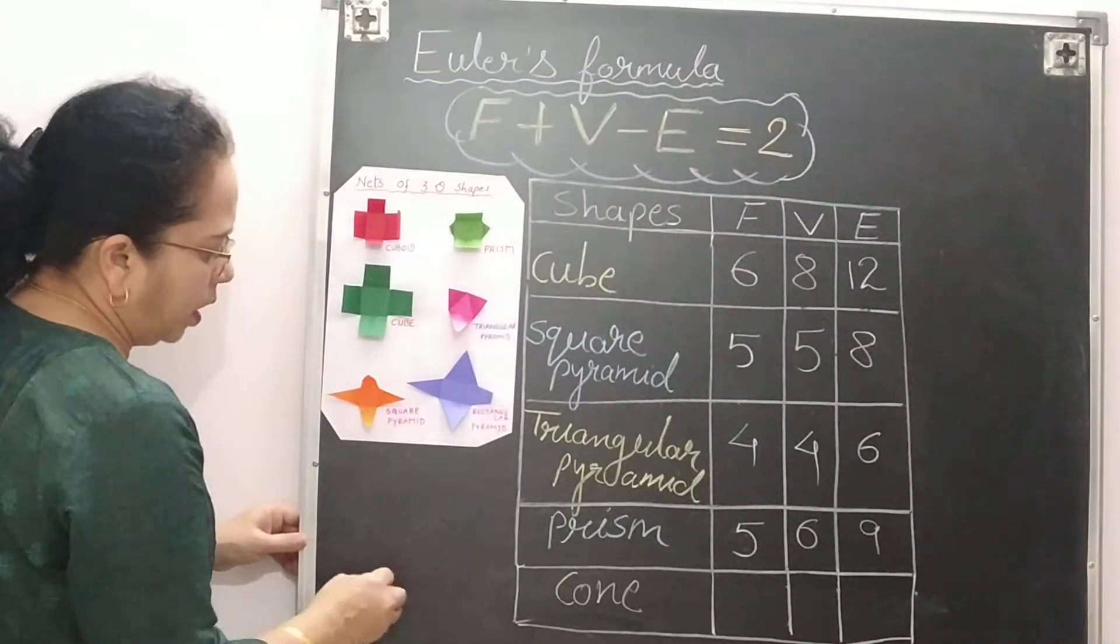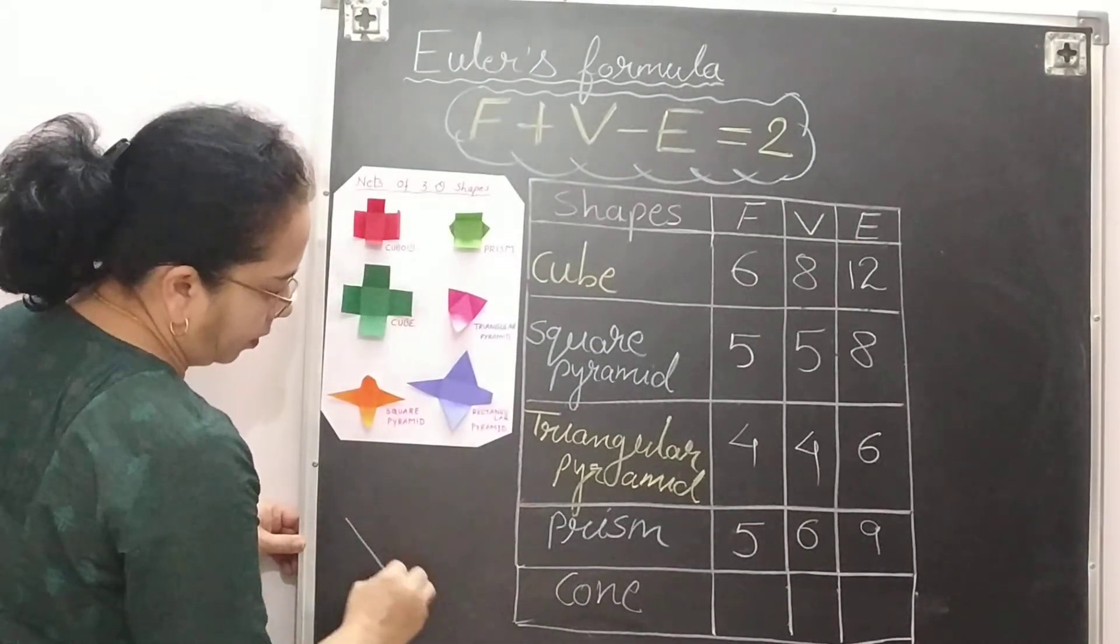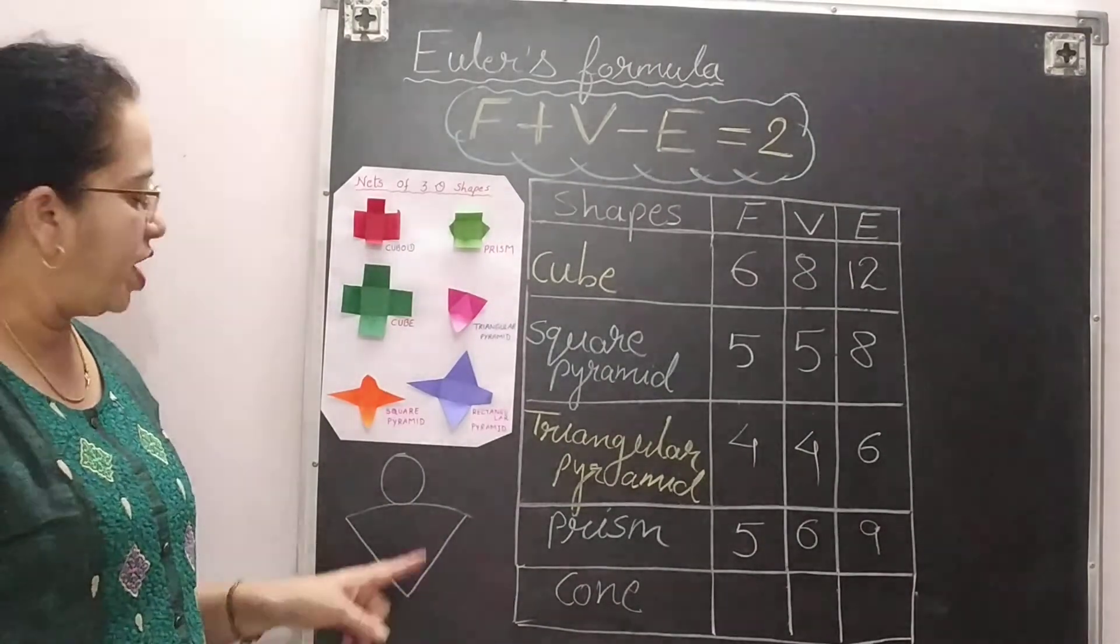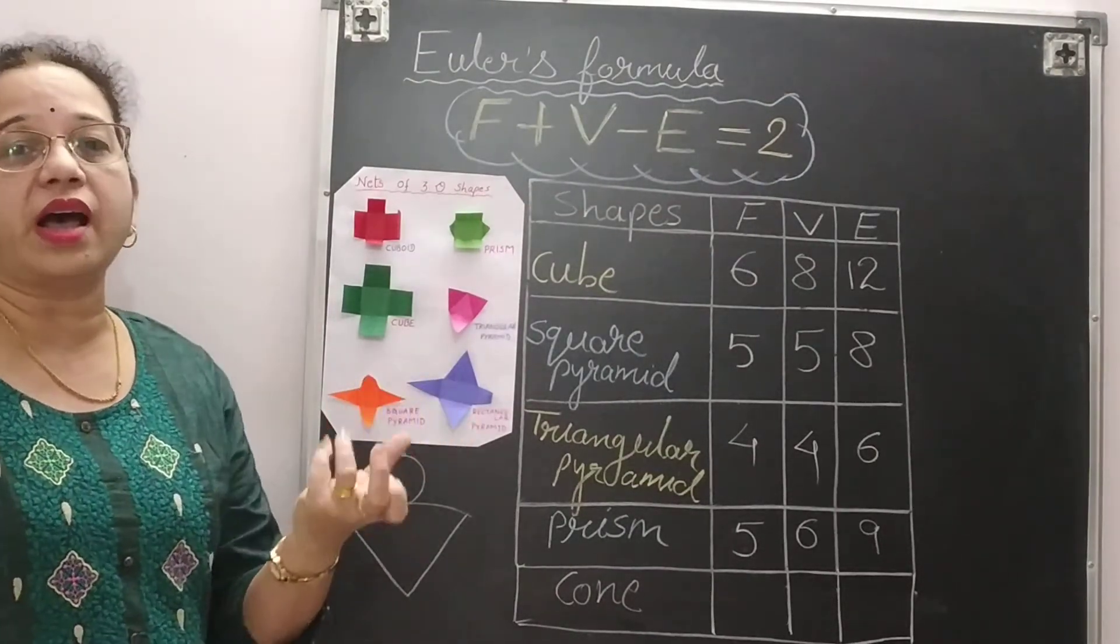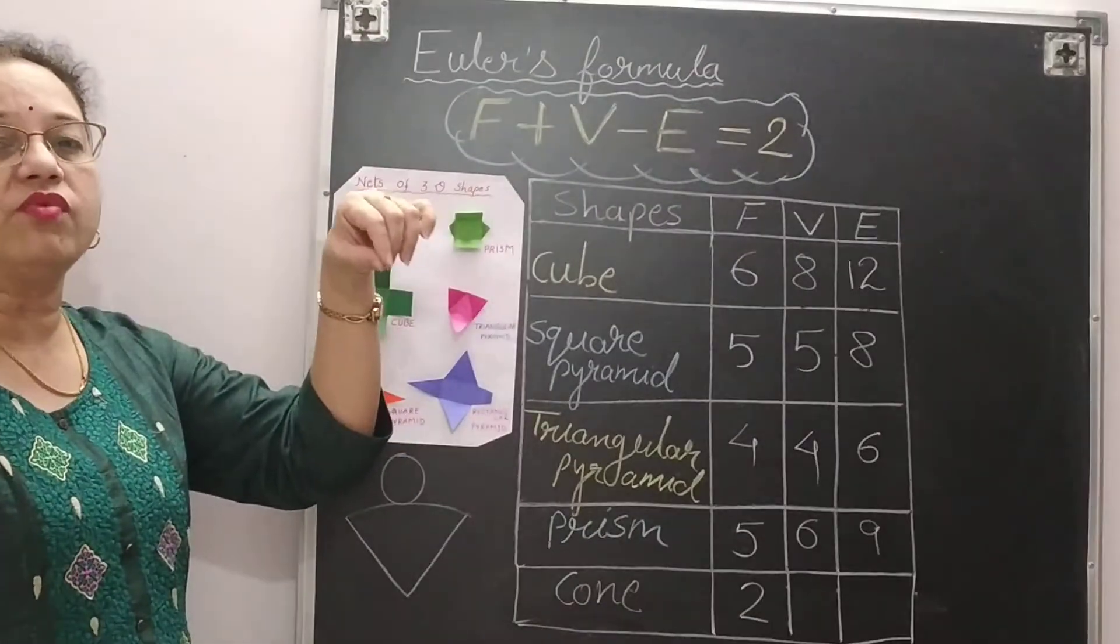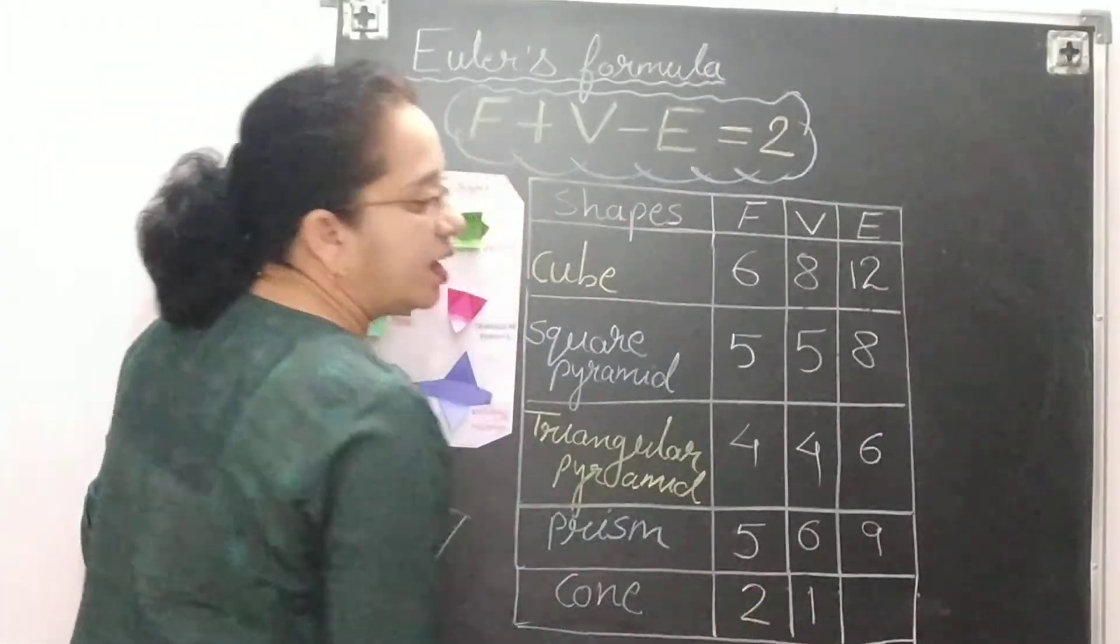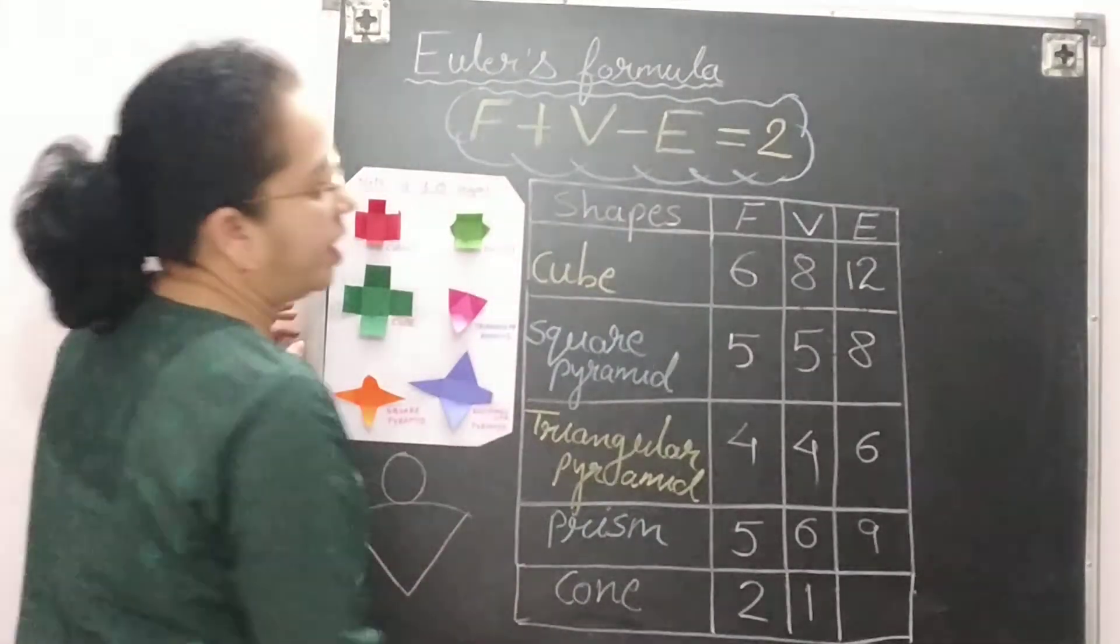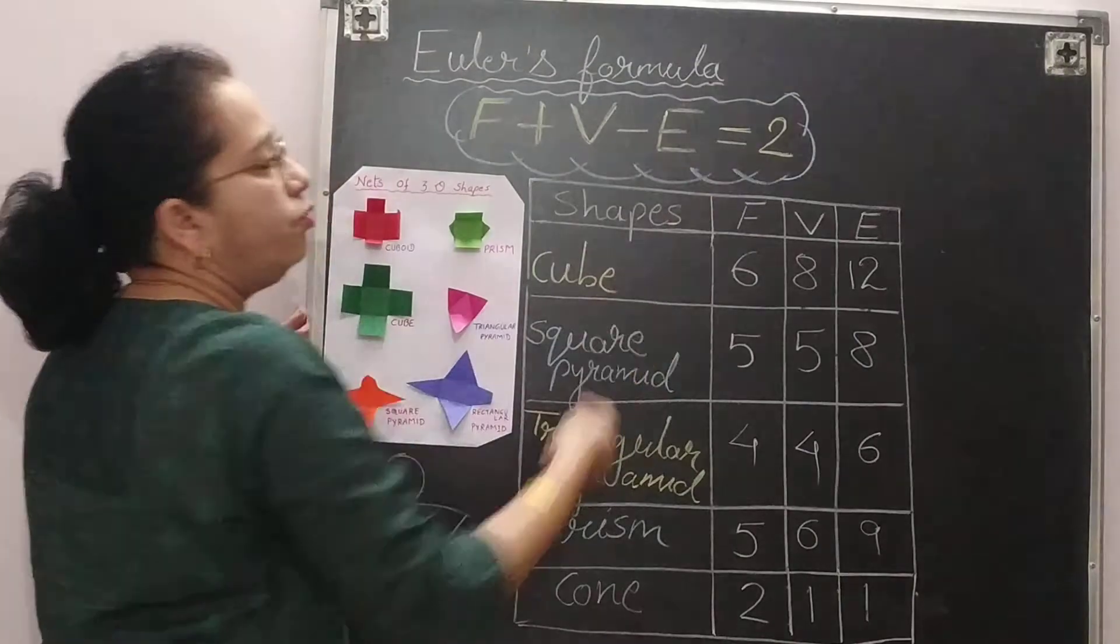Now for the cone, you know that the net of the cone is like this. So we have 2 faces. One is the circular face and one is the curved face. You can imagine the ice cream cone. So number of faces are 2. Vertices, we get only 1 vertex. You can imagine the cap also, birthday cap. You will get only 1. So vertices is 1. When you will join this then only you will get the cone. So the edges will be also 1. So again 2 plus 1, 3 minus 1 will give you 2.